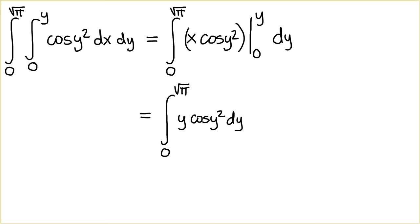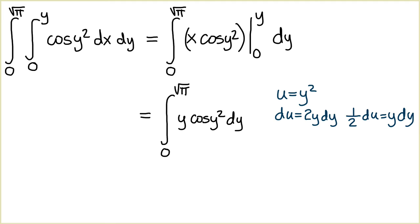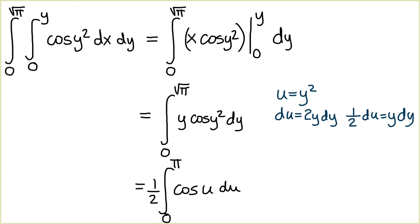So this simplifies to the integral from 0 to √π of y cosine of y squared. Letting u = y², we have du = 2y dy, or ½ du = y dy. Replacing y² with u and y dy with ½ du, and placing the ½ outside the integral, we obtain ½ times the integral from 0 to π of cosine of u.